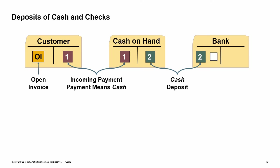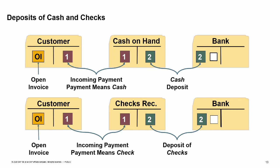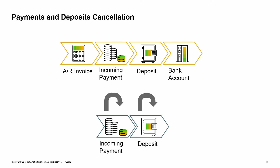If you take cash from your cash register or checks from your check drawer and bring them to your bank, you can use the deposit transaction to post this transfer. In this graphic we see the process for cash payments: the incoming payment credits the customer account and debits the cash-on-hand account. When the deposit is made, the cash deposit is credited and the bank account is debited. A deposit of checks is similar — the incoming payment credits the customer account and debits the checks-received account; when the deposit is made, the checks-received account is credited and the bank account is debited. SAP Business One supports various scenarios of cancelling payments, deposits, and checks — for example, in case you enter a wrong payment or deposit, or need to cancel a payment after the check was already deposited. Note that you can cancel one deposited check out of a deposit with multiple checks. For more details on cancelling payments, deposits, and checks, refer to the online help.